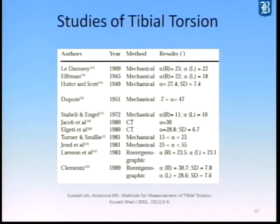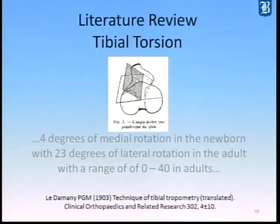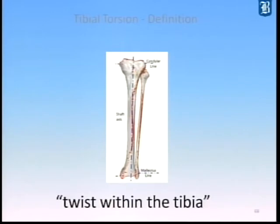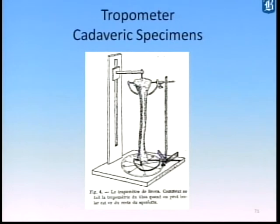Le Damanet was one of the first to describe tibial torsion. He discovered 4 degrees of medial rotation in the newborn with 20 degrees of lateral rotation in the adult, with a range of 0 to 40 degrees in adults. Medial rotation represents internal rotation as a negative number; positive numbers represent toe-out or a positive foot progression angle. Tibial torsion by definition means a twist within the tibia. He established the axes of measurement at both the tibial plateau and the transmallolar axis. His research was based on cadaveric specimens — there were no x-rays at that time.